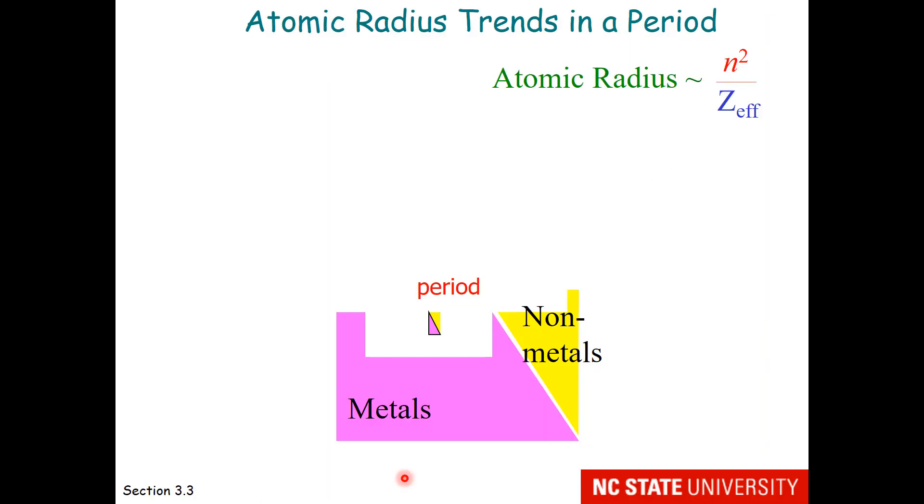So first, let's look at atomic radius trends within a period. These are proportional to n-squared over z-effective. So we'll start with lithium.